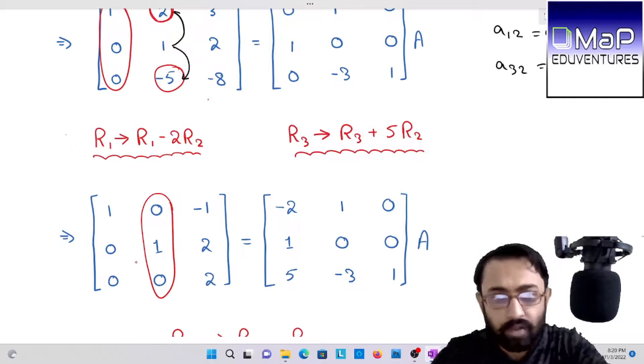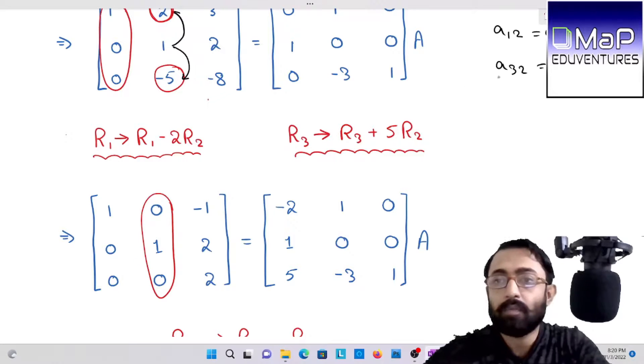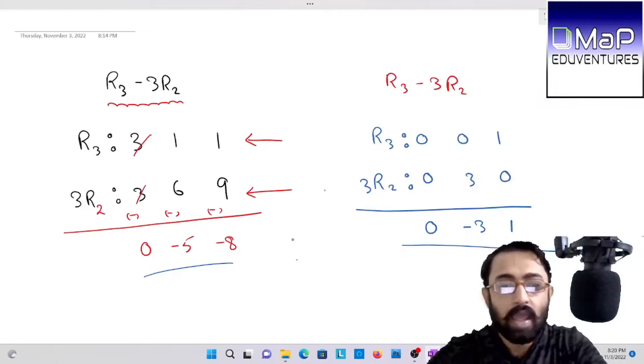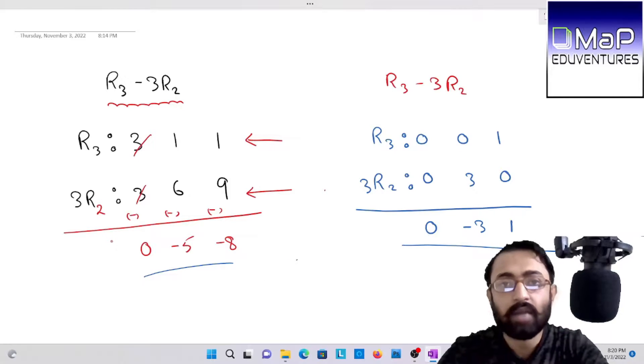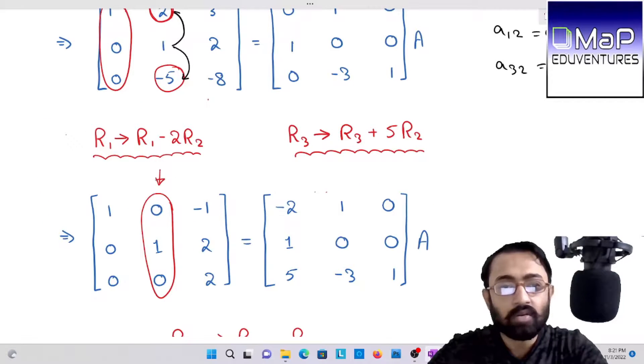To make this two zero, I will use R1 minus two times of R2. And again minus five to zero, I will use R3 plus five times of R2. By this simple calculation, you can watch here, automatically second column will be zero, one, zero. In calculation, as discussed in last video, there will be a discipline in the calculation part.